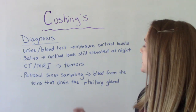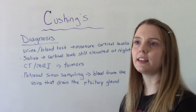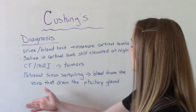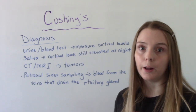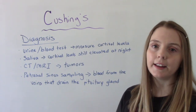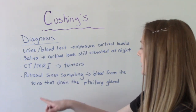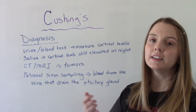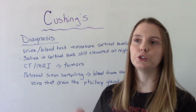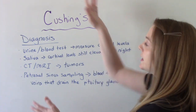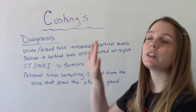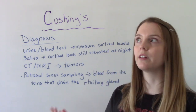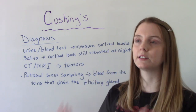They might want to do a CT or an MRI, especially if they think this might be caused by a tumor. If they want to rule out this being a pituitary problem, they're going to do petrosal sinus sampling. These are the veins that drain the pituitary gland, so they take blood from that area to see where the issue is originating. They need to find out the cause to help determine treatment.